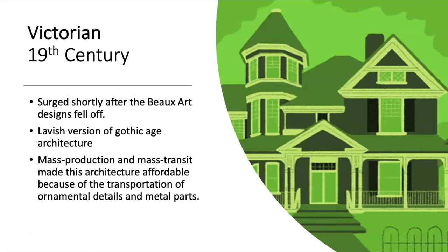Shortly after was Victorian architecture, a lavish version of the Gothic age architecture. Mass production and mass transit made this style affordable because of the transportation of ornamental details and metal parts. There are many versions of Victorian style — this is the generic first version that emerged.